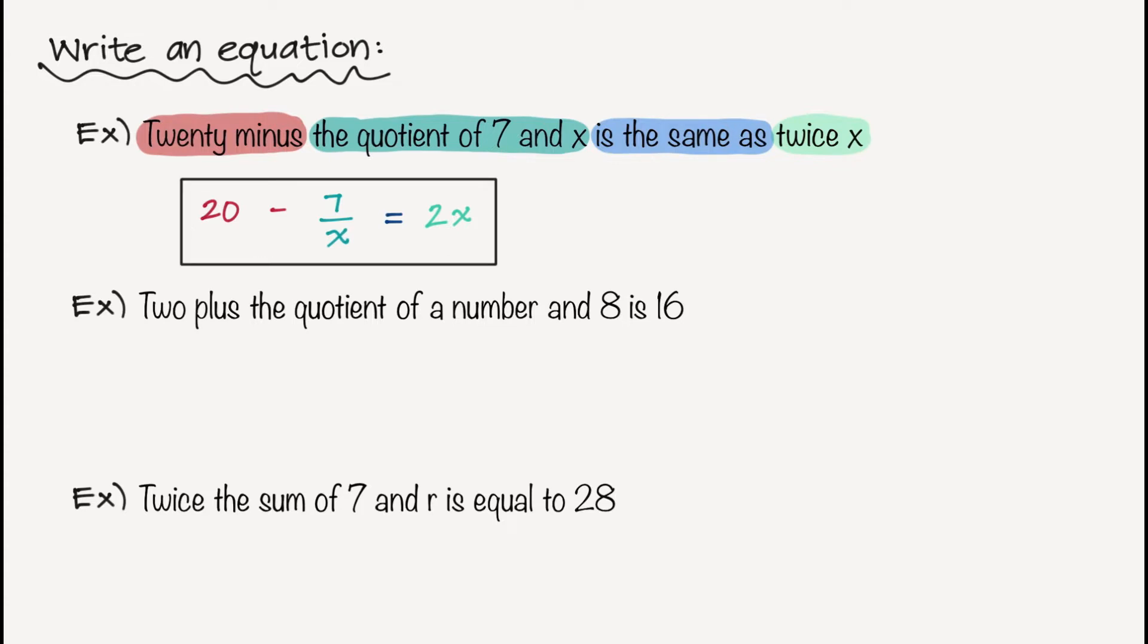Let's go ahead and highlight certain parts of our next one. So 2 plus, I'm going to have a 2 and a plus sign. And then I see the quotient of a number and 8. Since it doesn't tell me what the number is, I can pick any variable. So I'll pick n divided by 8. And then I just see the very short word is, which is an equal sign. And then I see the number 16. So 2 plus n over 8 is equal to 16. So that one's pretty straightforward as well.